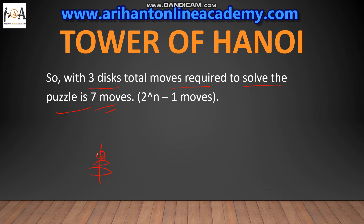So the conclusion is: with three discs, the total number of moves required to solve the puzzle is seven. For generalization, the formula is 2 to the power n minus one moves required to shift all discs. For example, with four discs: 2^4 − 1 = 15 moves. With eight discs: 2^8 − 1 = 255 moves.